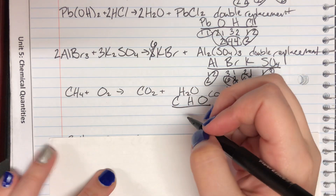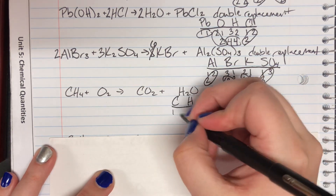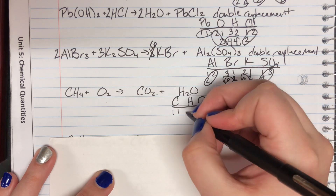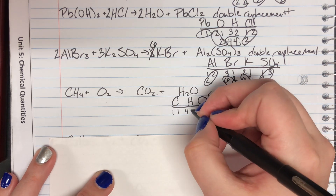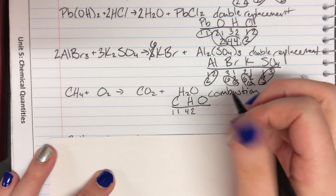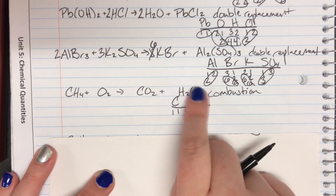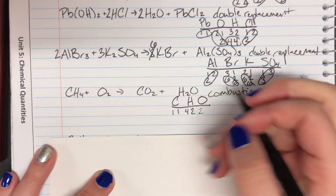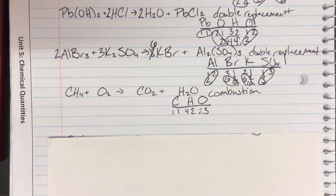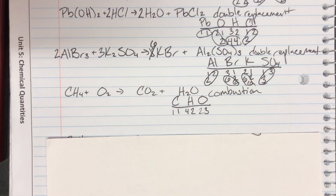Starting with our count: carbon — one on the left, one on the right. Hydrogen — four on the left and two on the right. Oxygen on the left: two; on the right, careful — it's in multiple places — two plus one gives me three. With MINHO, there are no metals or ions. The only non-metal that is not hydrogen or oxygen is carbon, and carbon is happy, so I leave it alone.